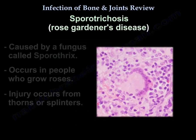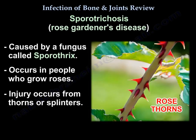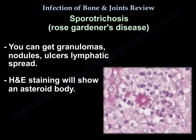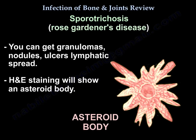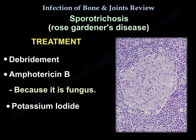Sporotrichosis is a fungal infection that occurs in rose growers. The injury happens from thorns and splinters. It can cause granulomas, nodules, then ulcers, with lymphatic spread. H&E stain will show an asteroid body. Treatment is debridement, amphotericin B, and potassium iodide.